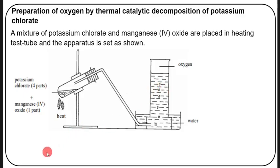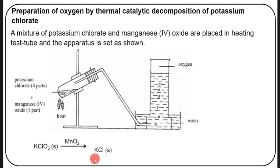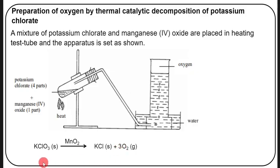The equation is: 2KClO₃ → [MnO₂ catalyst, heat] → 2KCl + 3O₂(g). The equation is balanced by placing a 3 in front of O₂, a 2 in front of KClO₃, and a 2 in front of KCl.